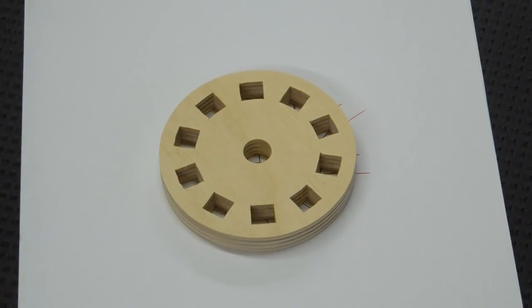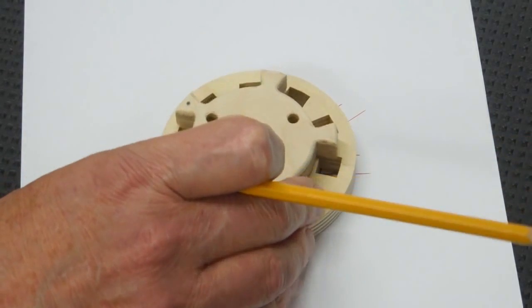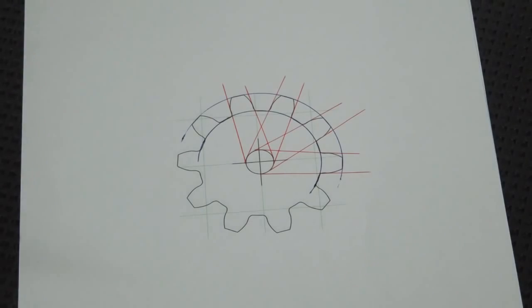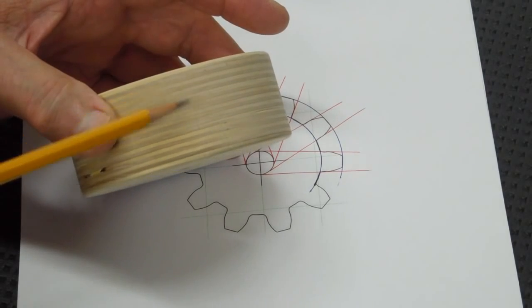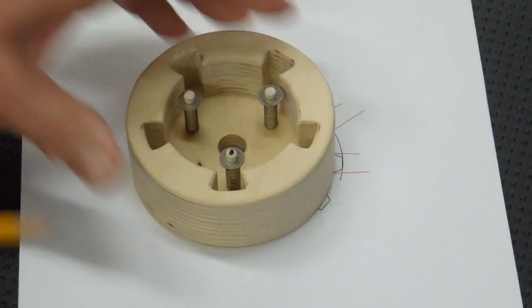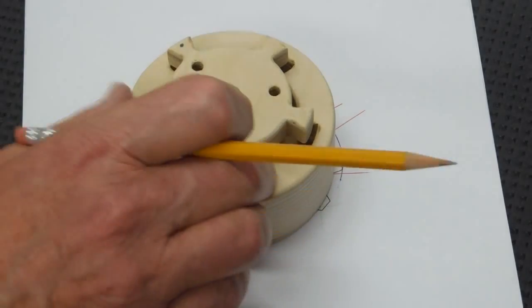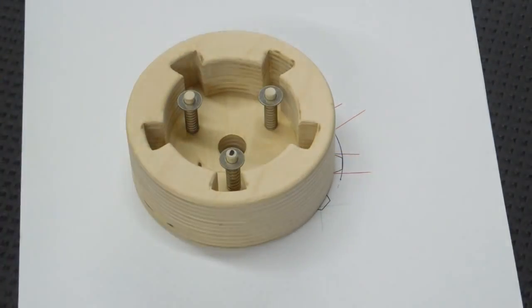For the dog, I took a double layer of plywood, traced out the outline, and then cut it out on the scroll saw.